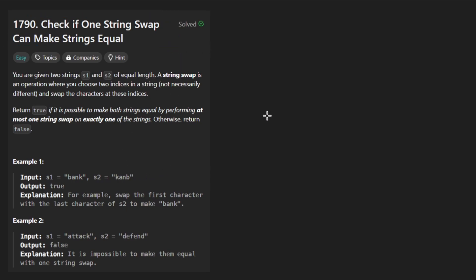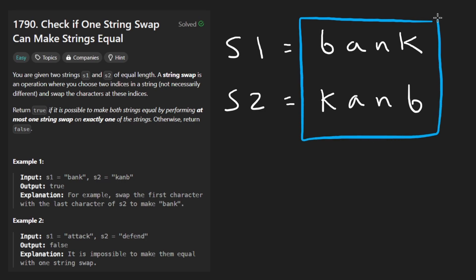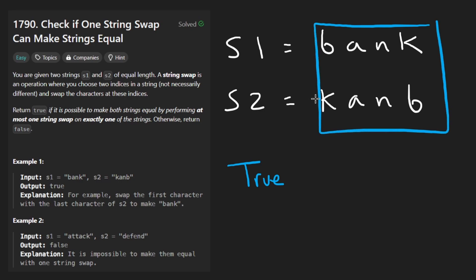The idea here is that we're given two strings that are guaranteed to be of equal length, so that makes things very easy for us. Suppose we have these two strings. We want to return true if it's possible to make these two strings equal. What we're allowed to do is perform a swap in either of the strings.